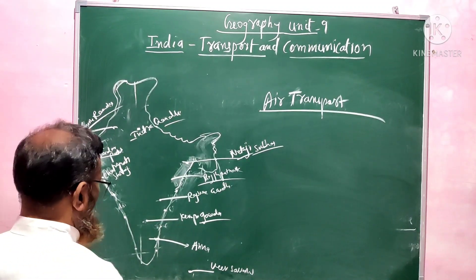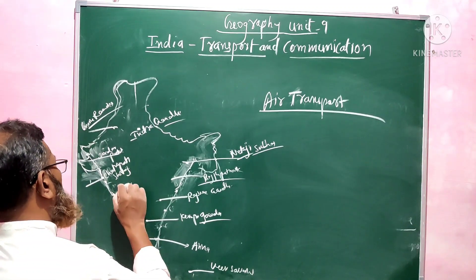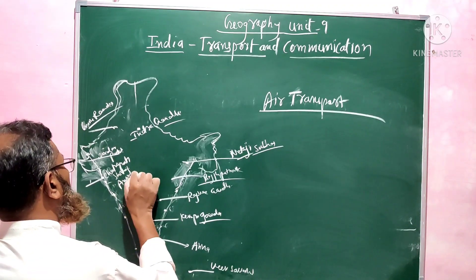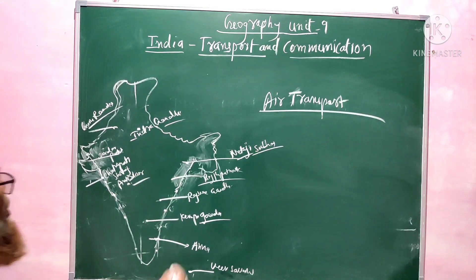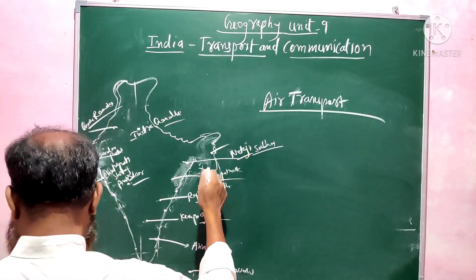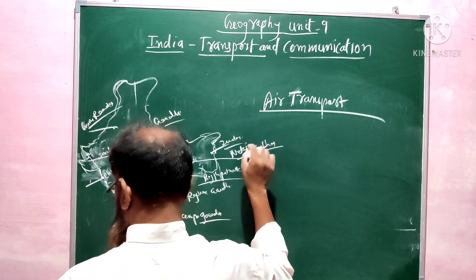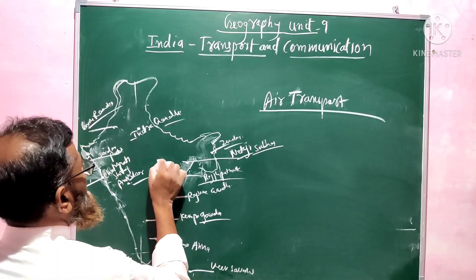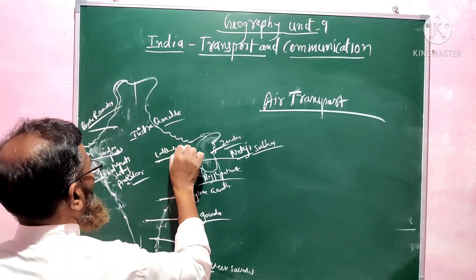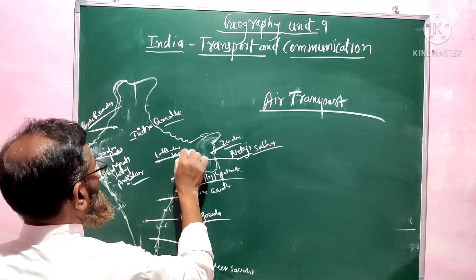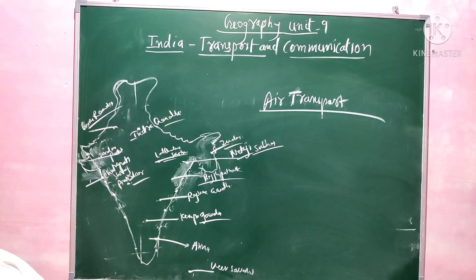Then Nagpur has Babasaheb Ambedkar Airport. Then Shillong has Umroi Airport. Then Varanasi has Lal Bahadur Shastri Airport. These are the important airports we find in India, including major ones like Delhi, Amritsar, Ahmedabad, Mumbai, Guwahati, Port Blair, Chennai, Bangalore, Hyderabad, Bhubaneswar, and others.